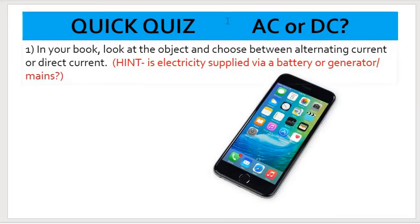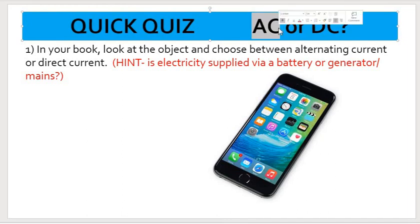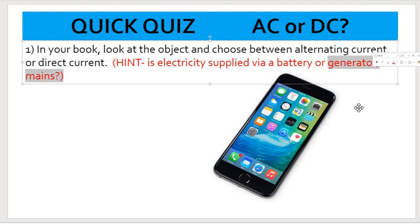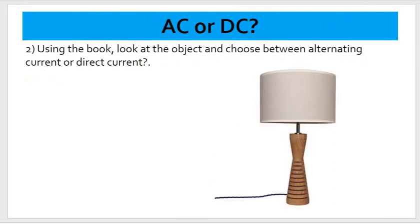So here's a quick quiz. Just a recap. AC stands for alternating current. DC stands for direct current. So having a look at the suppliers: cell phone or smartphone. Is this AC or DC current? So there's a hint. Is it battery charged, or does it come from the generator or the mains? Number two, the lamp. There's a clue.